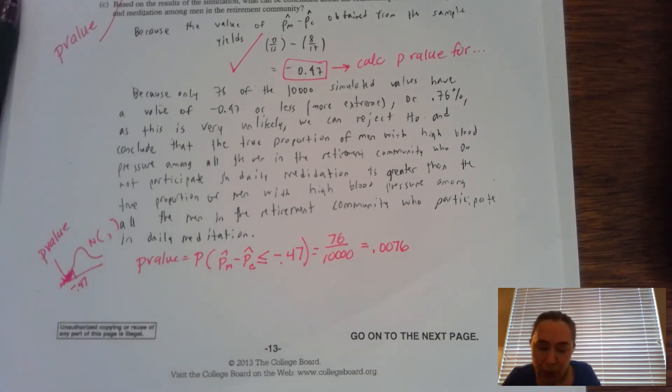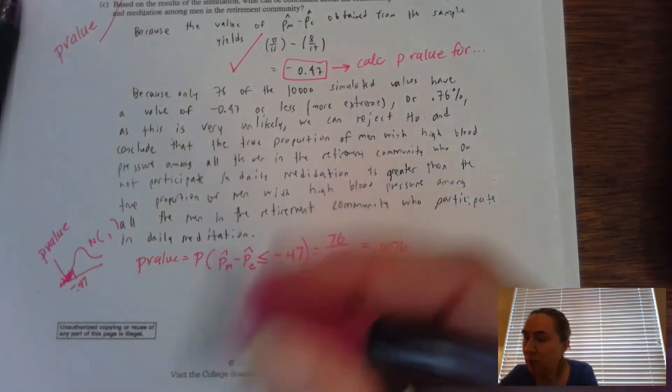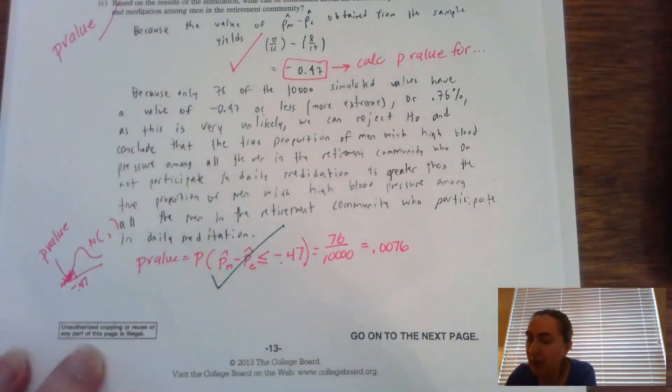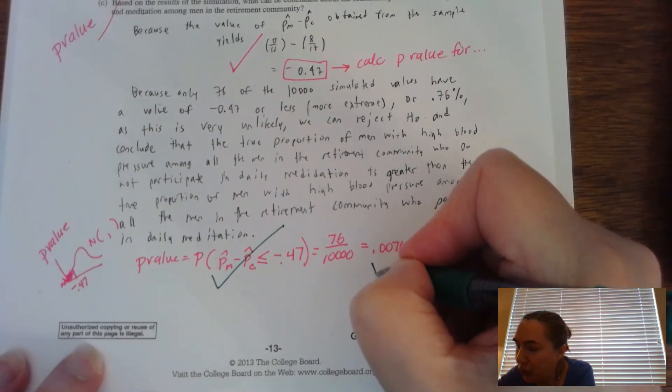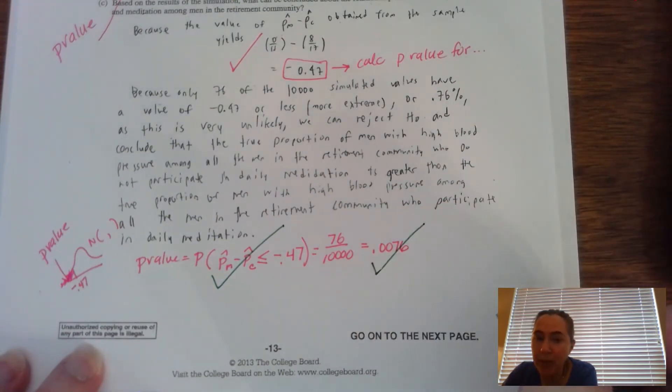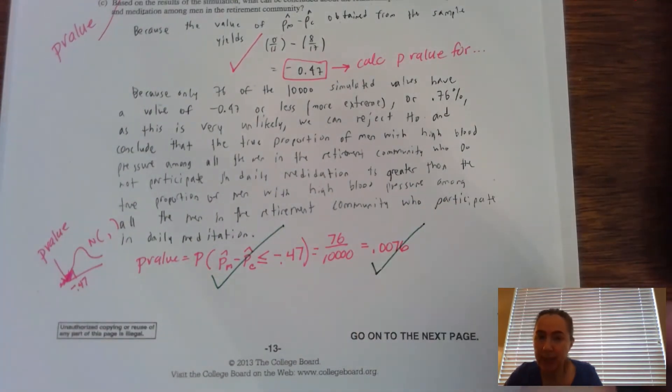Oh, hold on. You need to make sure that you have a check mark. What I want to see is a check mark for setting up that particular inequality. And also the next check, the third check is for finding out that that 0.0076 is the P value associated with this simulation.